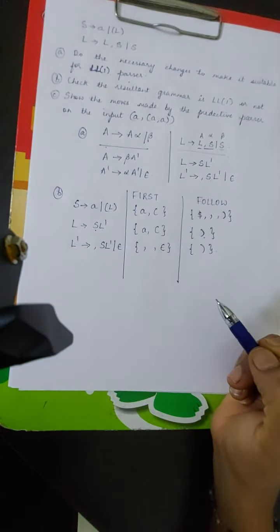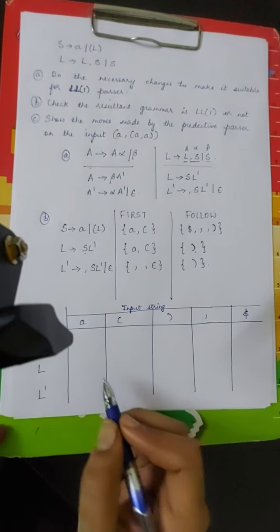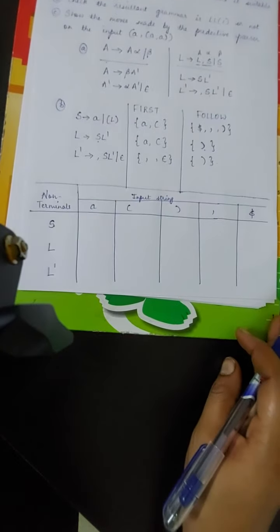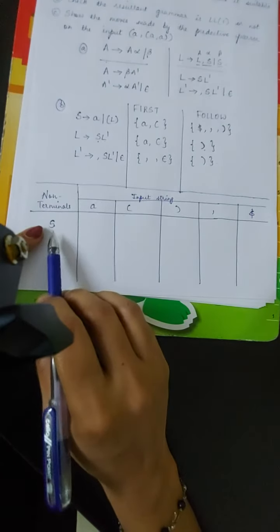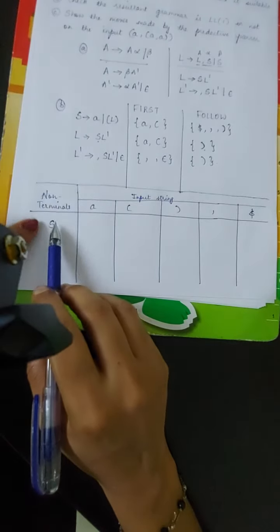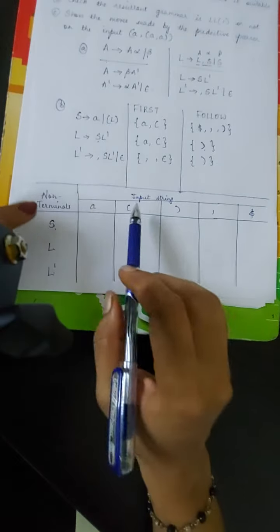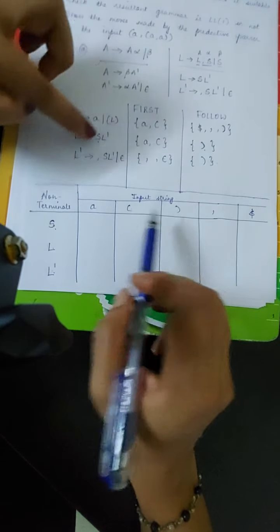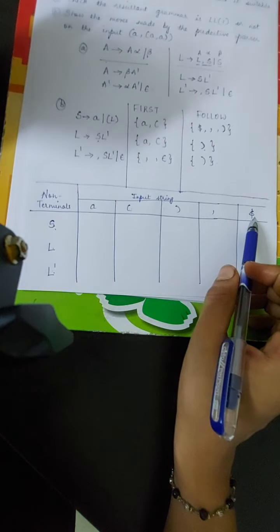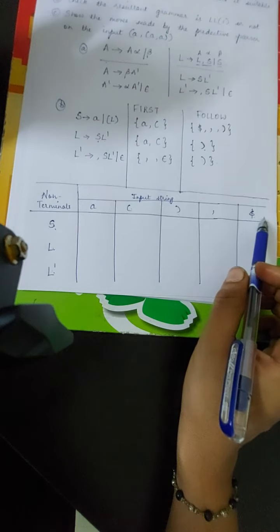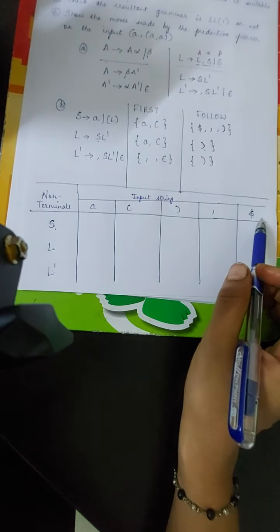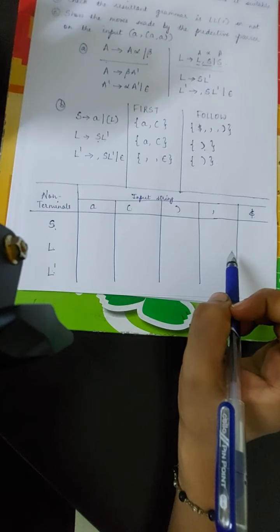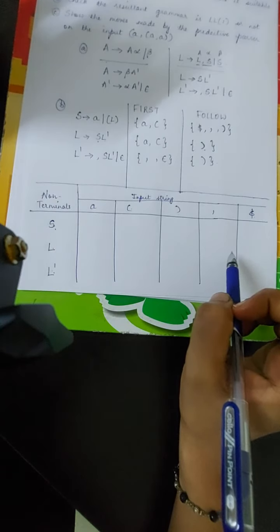Now using these FIRST and FOLLOW sets we construct the predictive parsing table. In the rows we write the non-terminals: S, L, and L-dash. In the columns we write the terminals: A, opening parenthesis, closing parenthesis, comma, and dollar. We do not include epsilon in the columns because epsilon is never present in the actual input string. Blank cells indicate error.